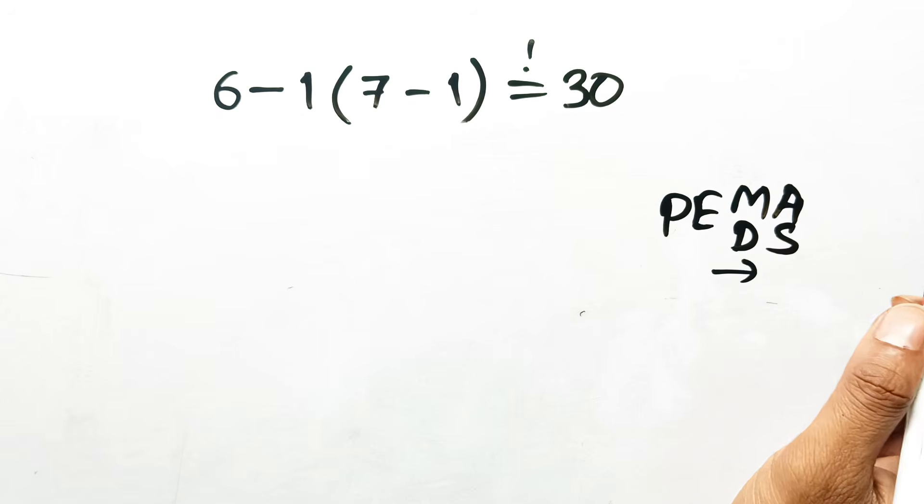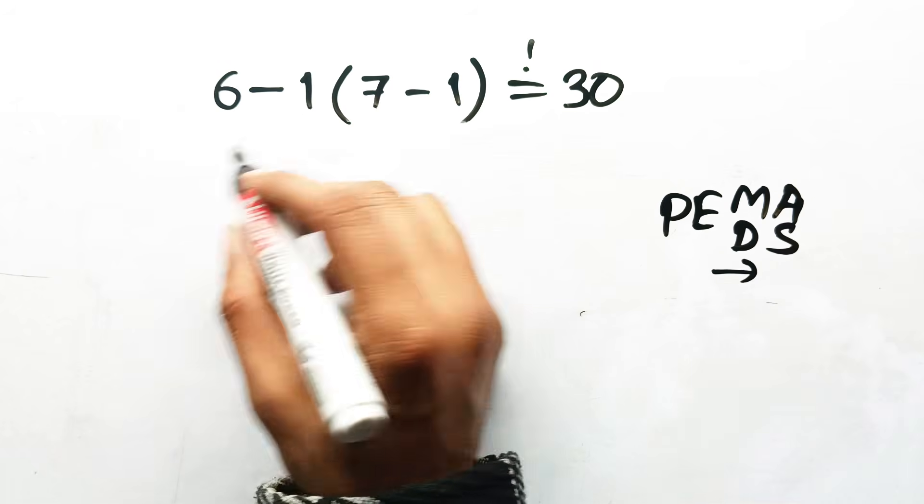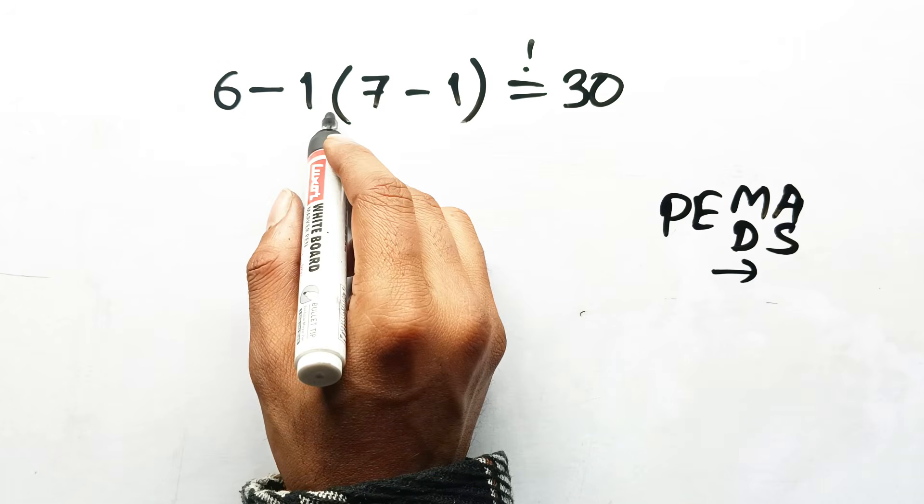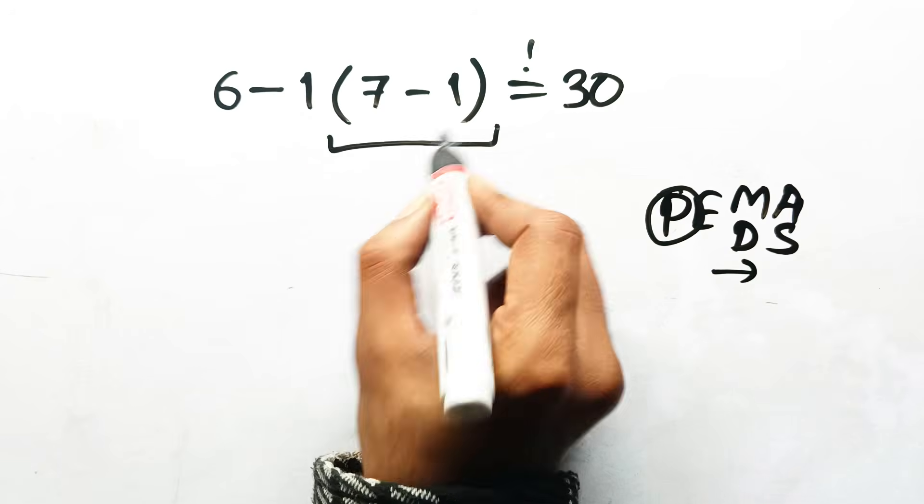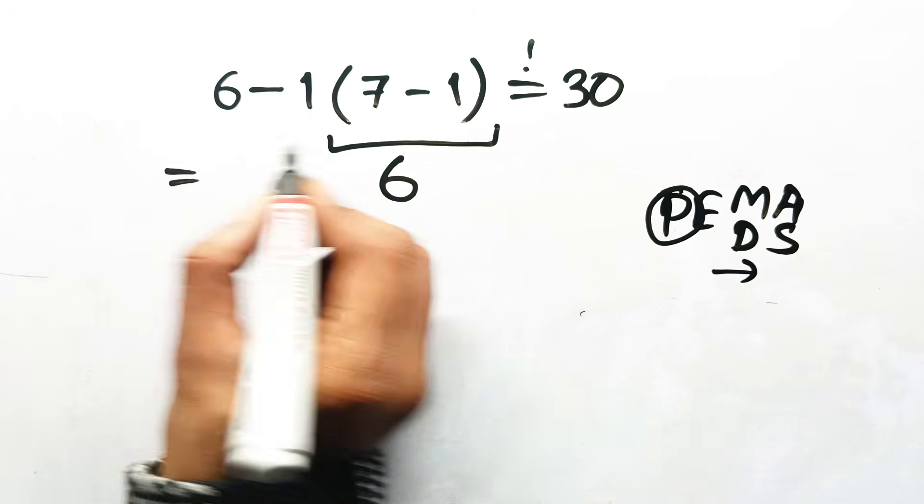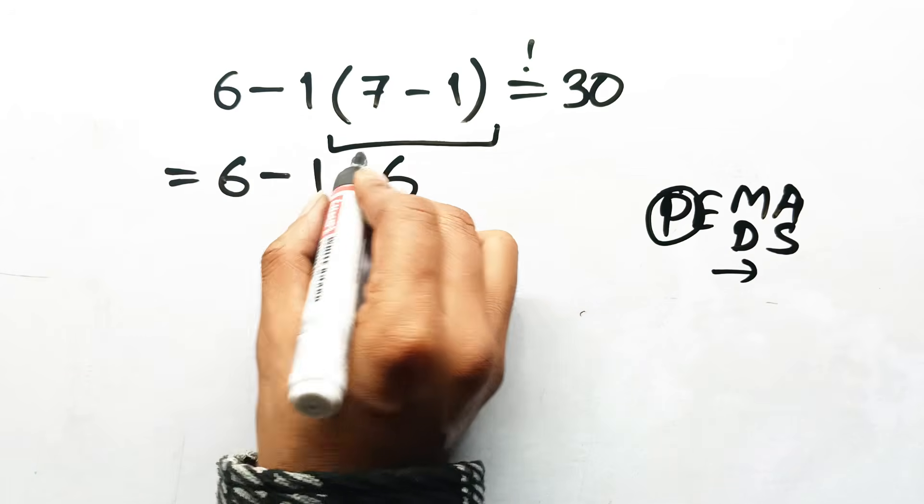Step by step, let's redo the problem properly. Start with 6 minus 1, 7 minus 1. First, handle the parentheses, 7 minus 1 equals 6. So now we have 6 minus 1 times 6.